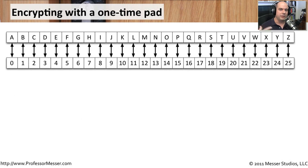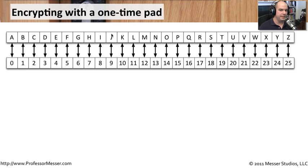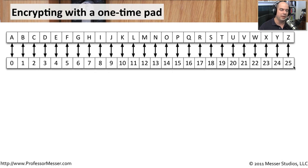The process of encrypting with a one-time pad is relatively simple. We'll step through it here, and we would follow these same steps in reverse to decrypt. The first thing we want to do is put our entire alphabet down and assign every letter a number — starting at 0 with A and ending at 25 with Z. Those are the numbers we'll use to perform our calculations.